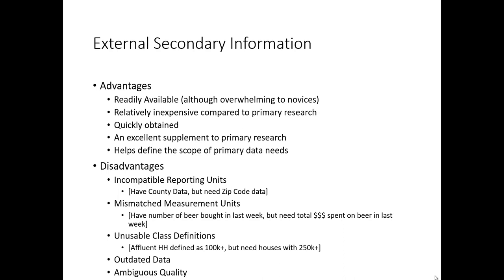Fourth, secondary information is often outdated. When we showed the GFK University reporter data, we saw that here in 2016 — when this video was taken — the most recent information available was from spring 2014. This is a challenging question for marketers: is information from over two years ago appropriate for today's market, or is it sufficiently outdated that primary data collection is needed? In the fast-moving world of marketing, data can become outdated very quickly.